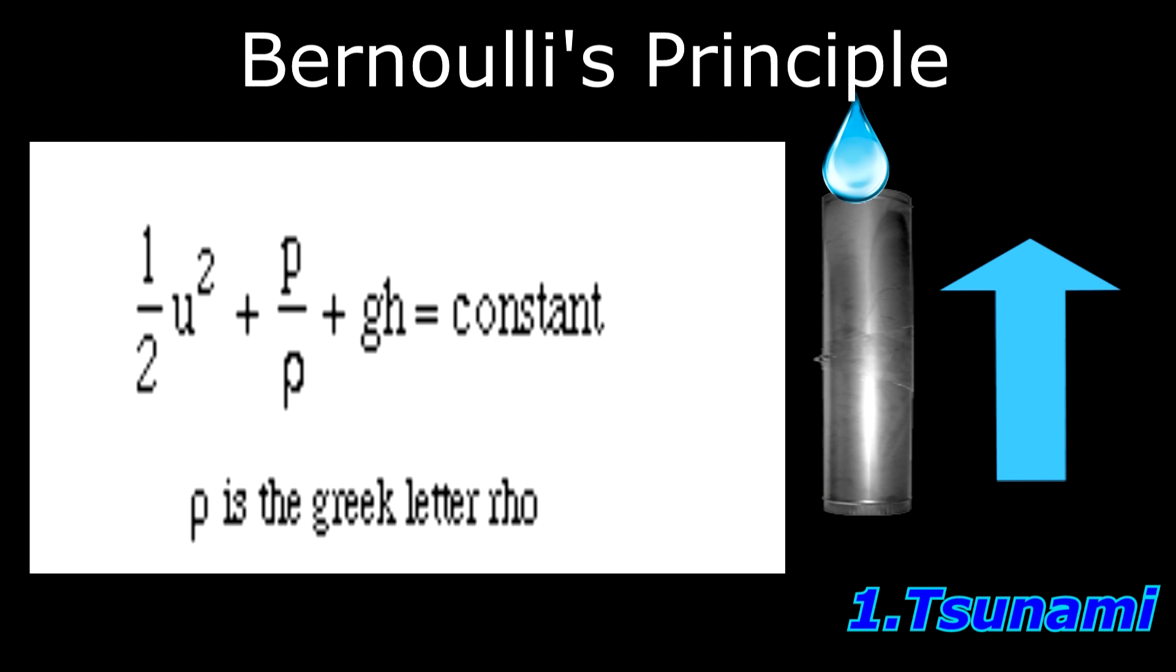When the water flows up a pipe, we would imagine it to slow down. In the equation, h is now increasing, therefore the flow speed u is decreasing.